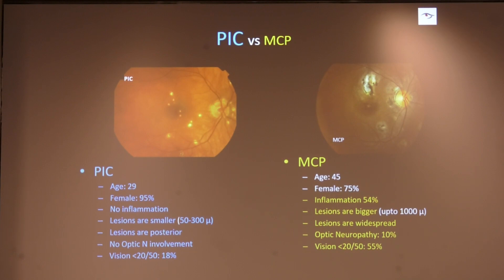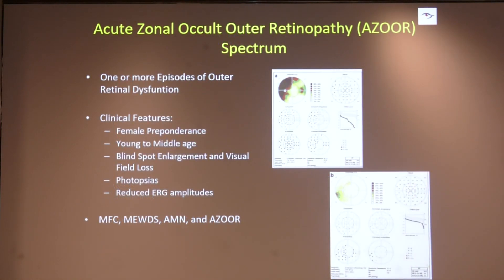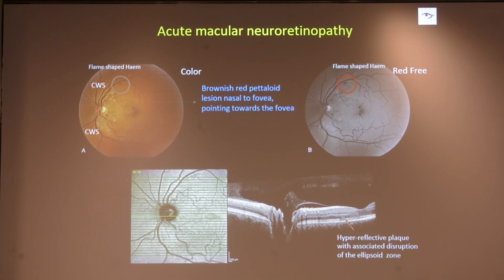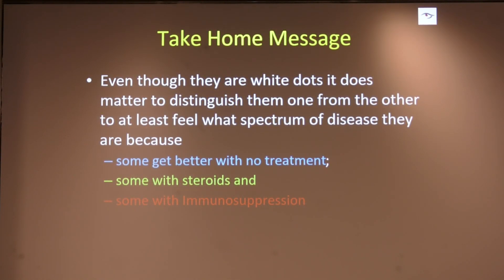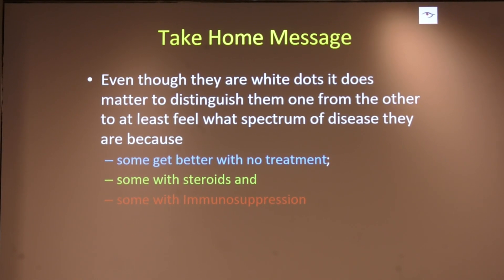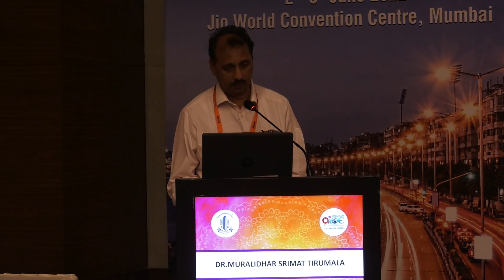Multifocal choroiditis with pan-uveitis and PIC have very interesting differentiating features worth reviewing. In conclusion, even though they are all white dots, it does matter to distinguish them — some get better with no treatment, some with steroids, some with immunosuppression, and some with a combination of all of these. Thank you.